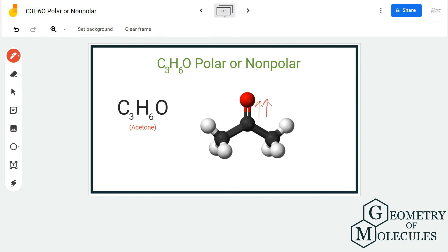This dipole moment is not cancelled out in this molecule. The regions around oxygen atom are negatively charged and the regions around carbon and other hydrogen atoms have partial positive charges. Such formation of poles in acetone molecule makes it a polar molecule. So C3H6O or acetone is a polar molecule.